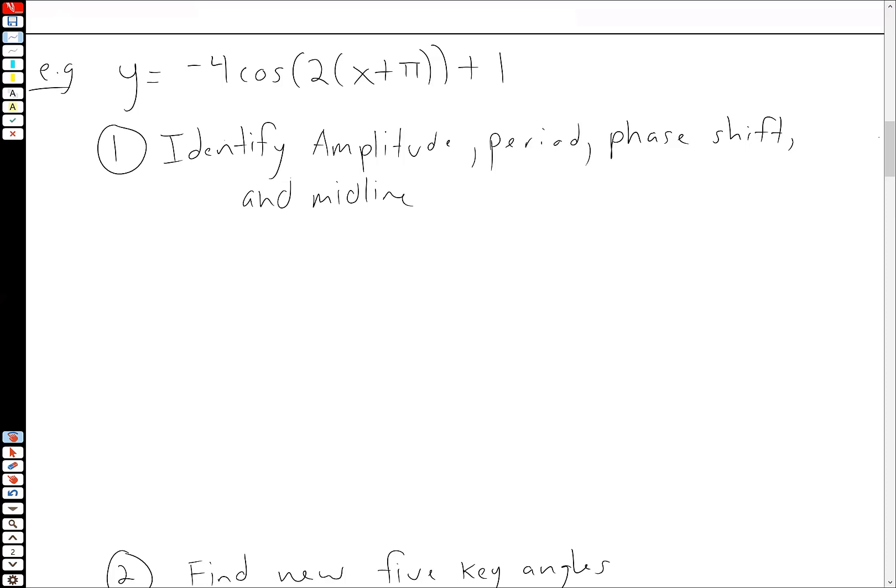All right. So Y equals -4 cos of 2 times X plus π plus 1. So the first thing I recommend whenever you're trying to graph a sinusoidal function, put your detective caps on. Identify certain things. So find the amplitude, the period, the phase shift, and the midline.